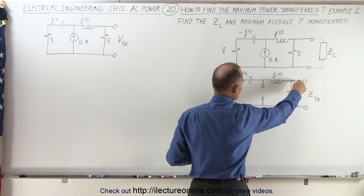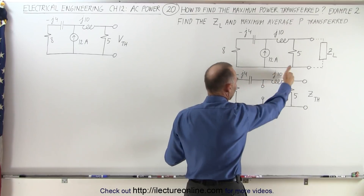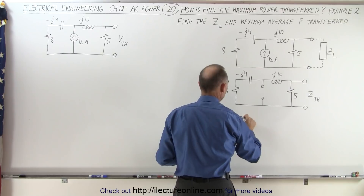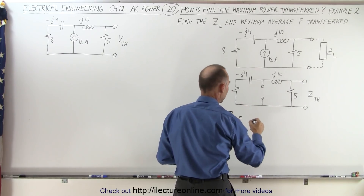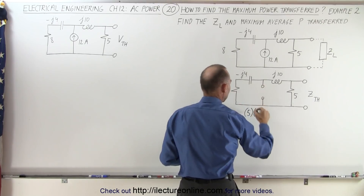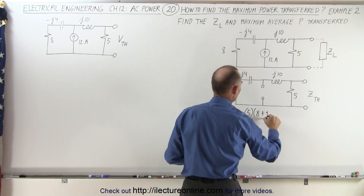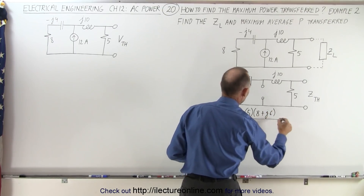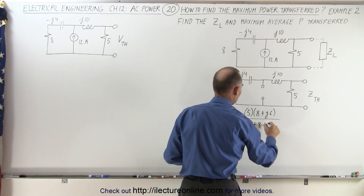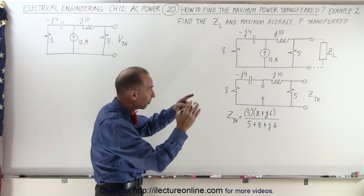Notice that from here we have what looks like a parallel circuit, with one branch on one side and one on the other side, which means that the Thevenin impedance is equal to the product over the sum. The product would be 5 times (8 + j10 − j4), which gives us plus j6, divided by the sum of the two — that would be 5 plus 8 plus j6. So it's the product over the sum of the two impedances of the two branches.